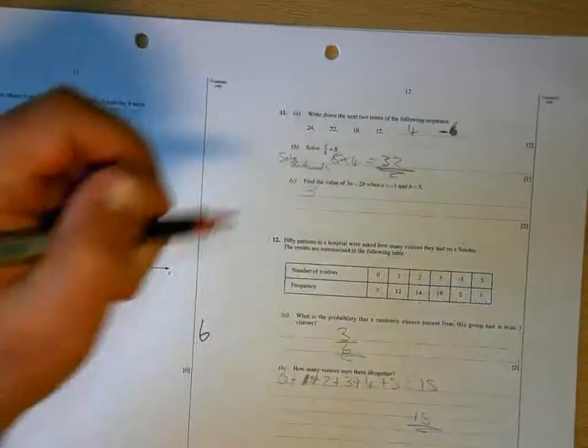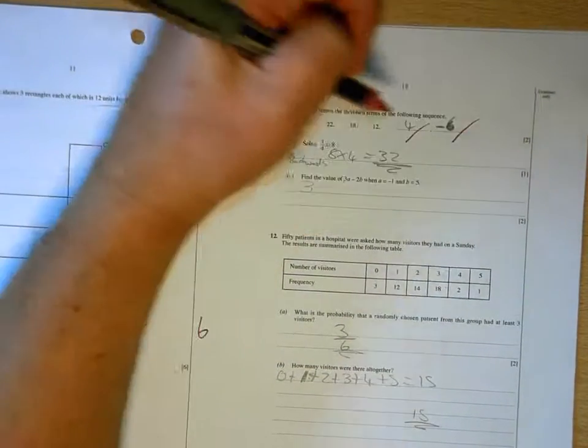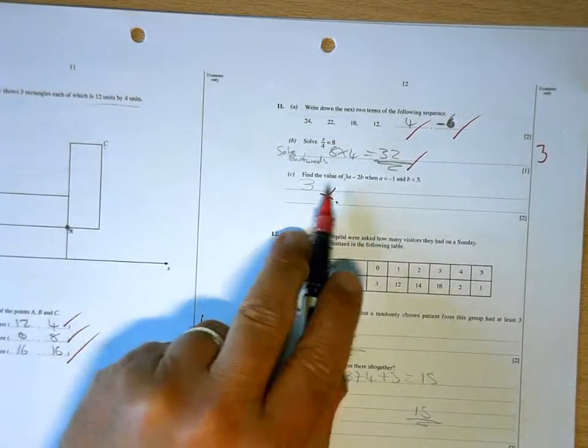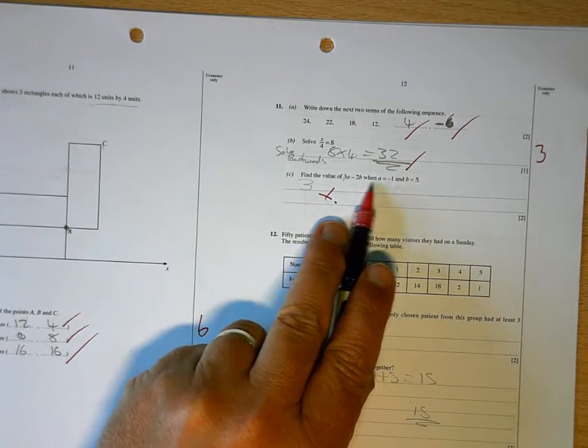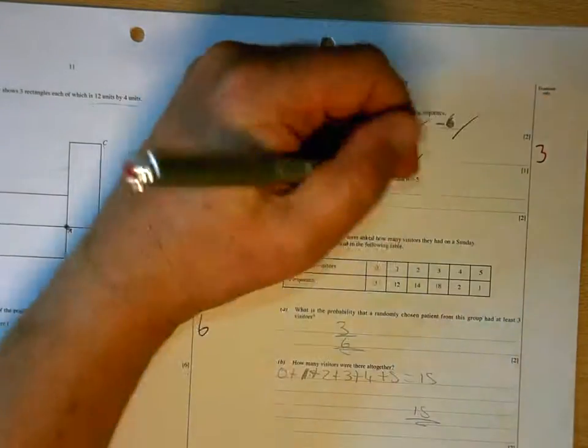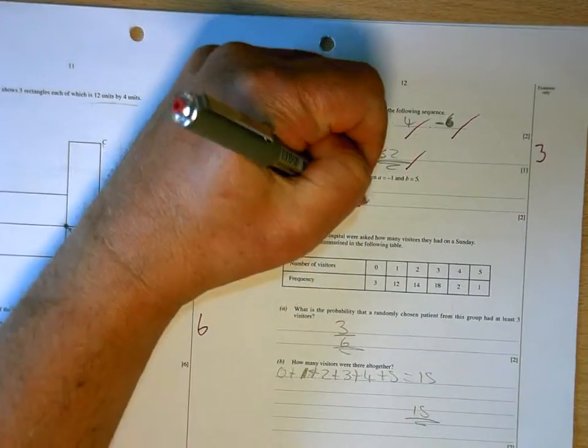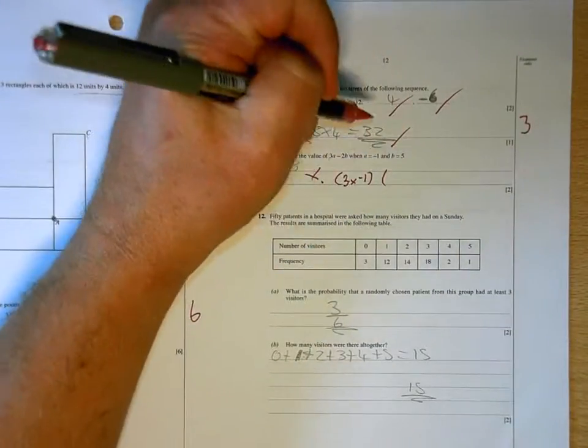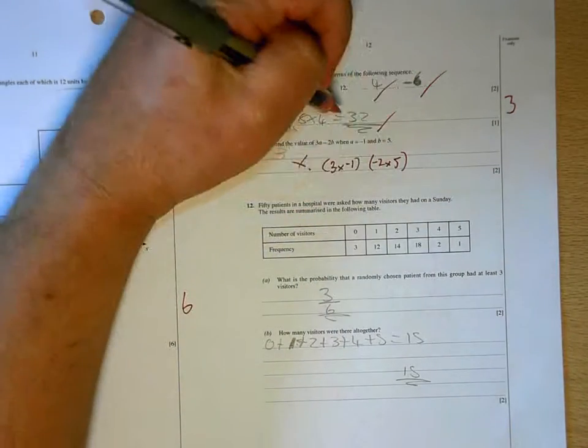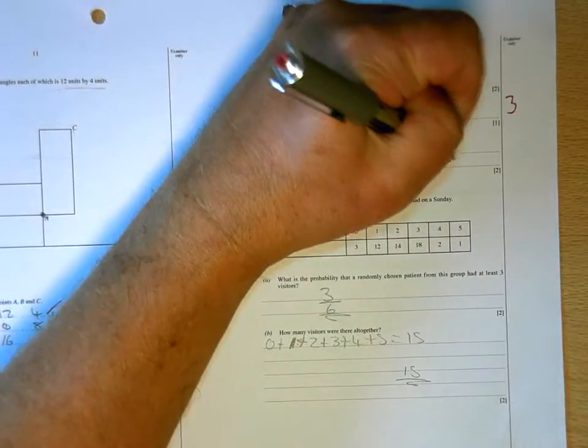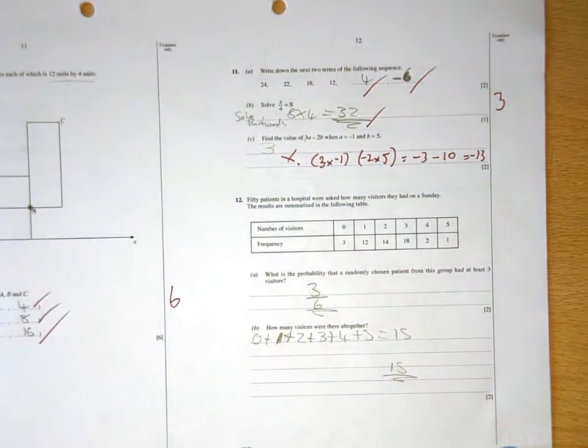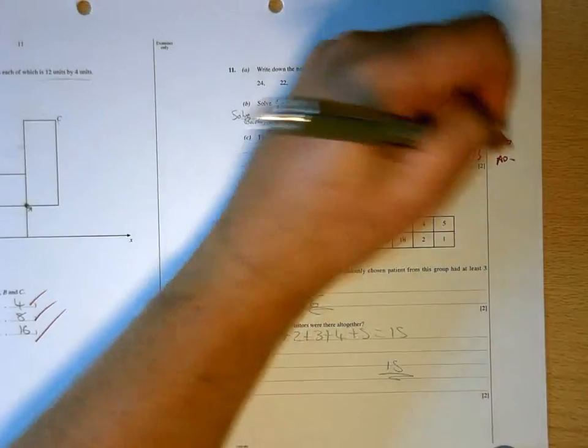Correct, correct, correct. Good work. Four, negative six. Thirty-two. That one's wrong with you. What you have to do here is substitute the a and the b with negative one and five. And remember that the number and the letter are joined by a times. So, what you've got is three times negative one and negative two times five, which is negative three and take another ten, which gives you minus thirteen. So, no method for that seen, so I can't give you any marks.